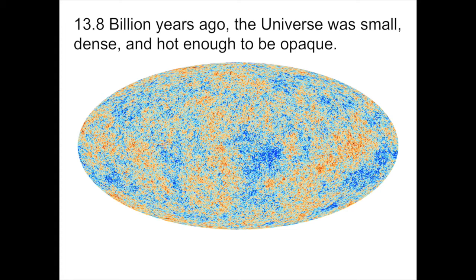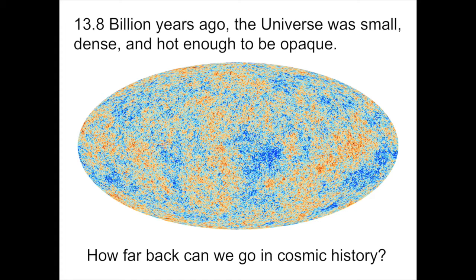When the universe was 380,000 years old, it suddenly became transparent to light, producing the cosmic background radiation that we see today. This red and blue map that you see here is the best map to date made of the small fluctuations in temperature seen in the cosmic microwave background. We're seeing the universe as it was when it was only 380,000 years old. How far back can we go in cosmic history? How far back does our knowledge of state-of-the-art physics press, and how close can we get to the very beginnings of everything at the very start of the Big Bang?